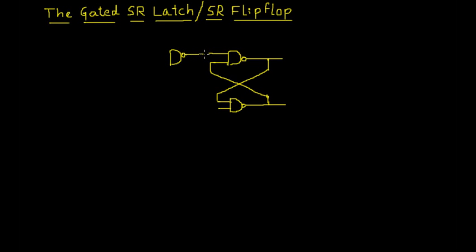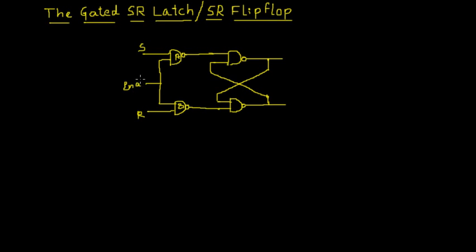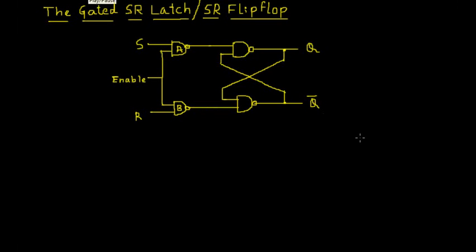Similarly, the output of the second NAND gate is connected to the input of the first NAND gate — hence the connection becomes cross-coupled. Now I will draw two more NAND gates: the first I'll name NAND gate A and the second NAND gate B. One of the inputs to NAND gate A is S, one of the inputs to NAND gate B is R, and I connect the other two inputs together and call that input Enable. The two outputs are Q and Q bar.